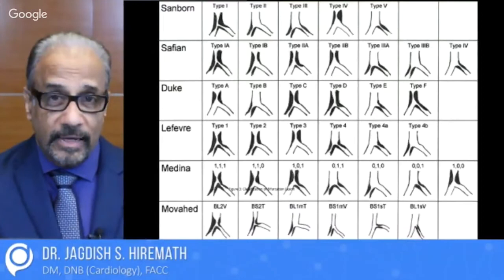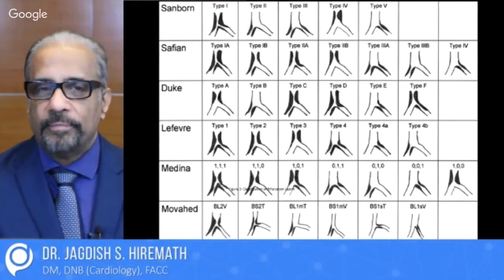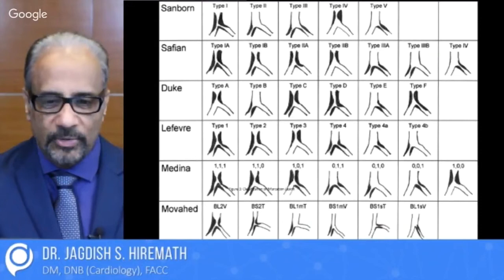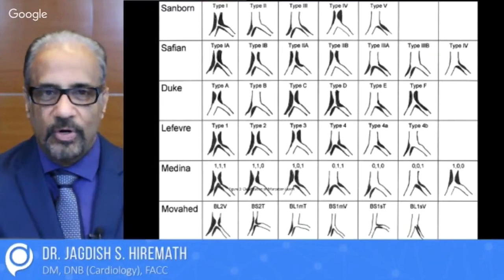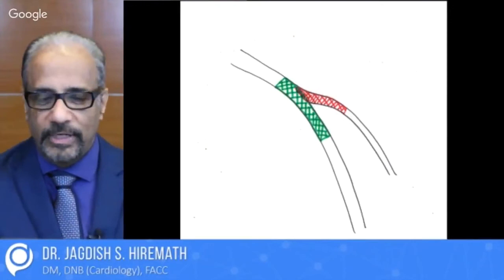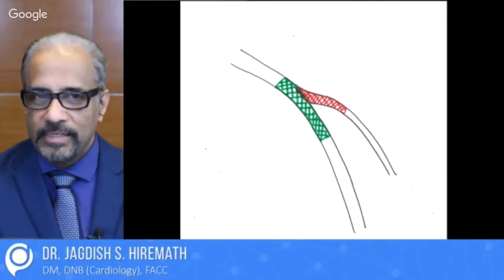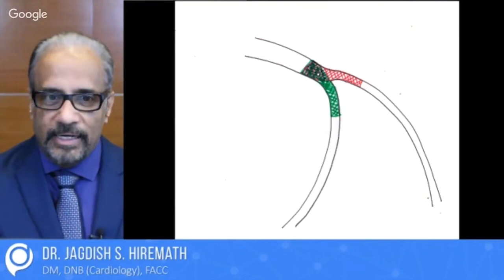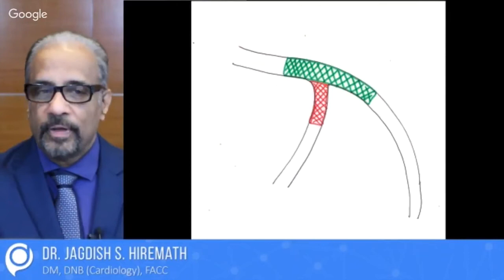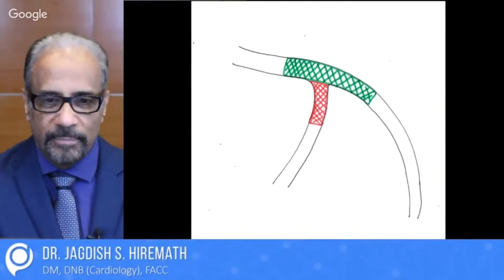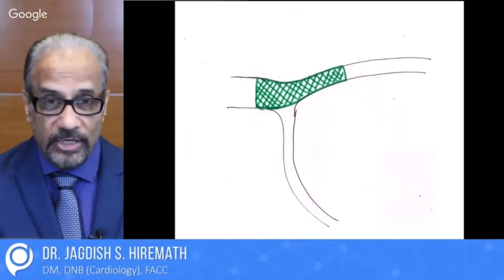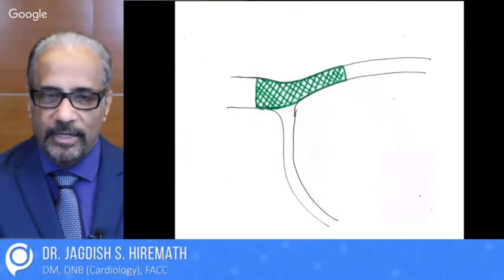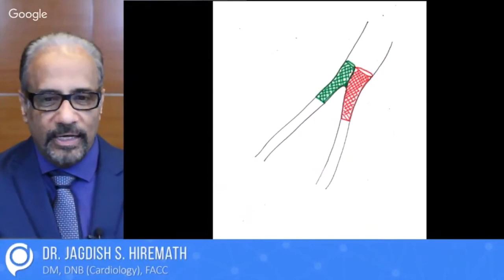The next type of angioplasty is a bifurcation — it's a complex classification. We generally use the Medina classification: 001, 101 based on whether the main branch or side branch is involved. Various types of stenting are used. For example, you see the side branch stent is red — it is crushed and the main stent is in the main branch (in green). The side branch stent comes inside and both are overlapping in the main branch; it is called a crush procedure. Or sometimes you can do what is called T-stenting, where the main branch is in the green and the T comes from the red branch.